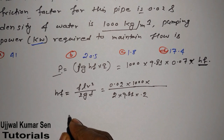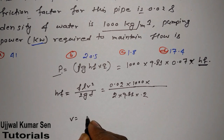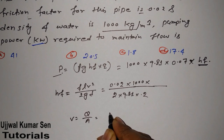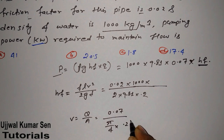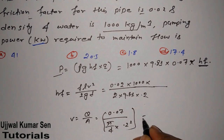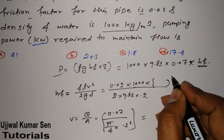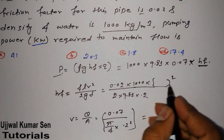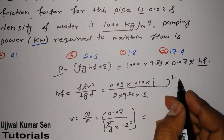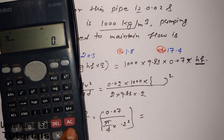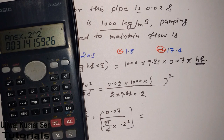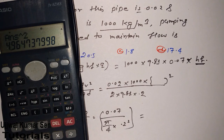Velocity V = Q / A = 0.07 / (π/4 × 0.2²). Be careful not to forget squaring the diameter. Computing π/4 × 0.2² gives the cross-sectional area, and dividing Q by that area gives us the velocity in m/s.